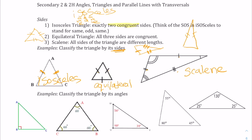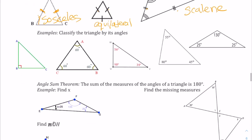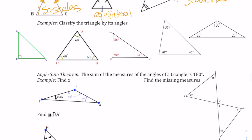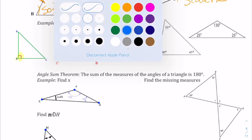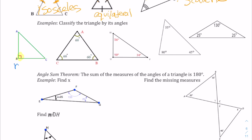This next part asks us to classify the triangles by their angles — that's when we want acute, obtuse, right, or equiangular. So this first one, we're looking at that right angle, which makes it a right triangle.